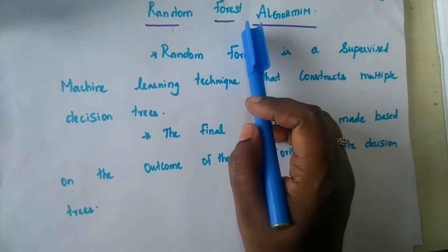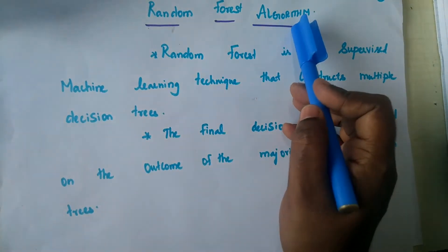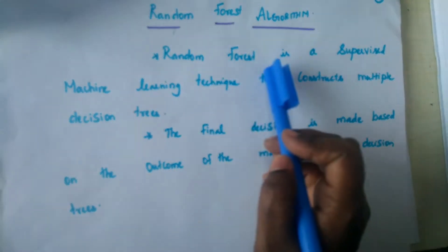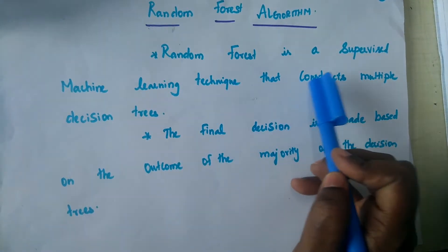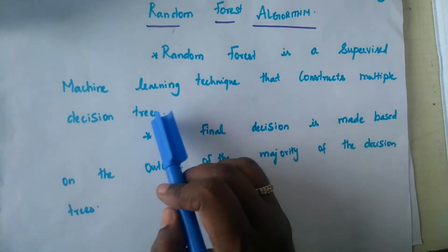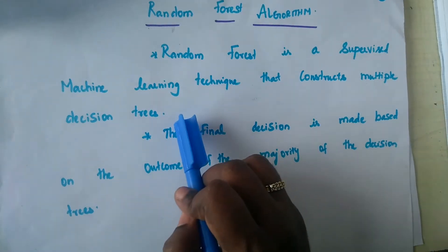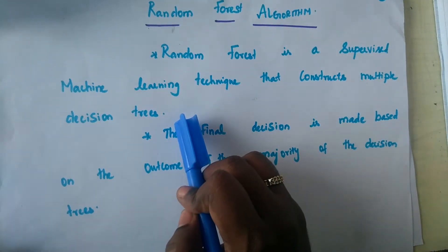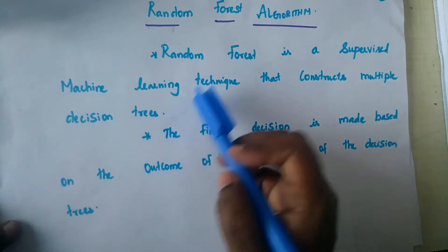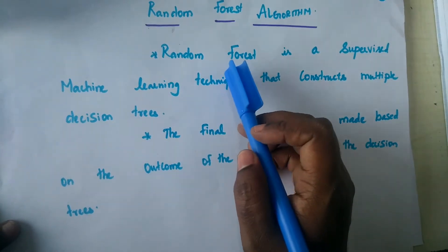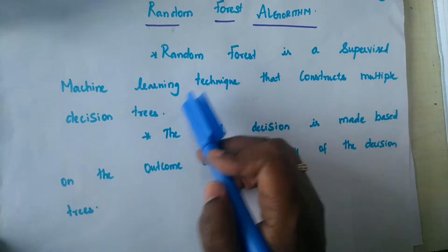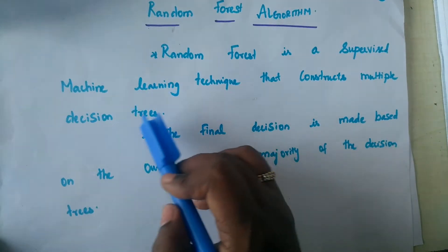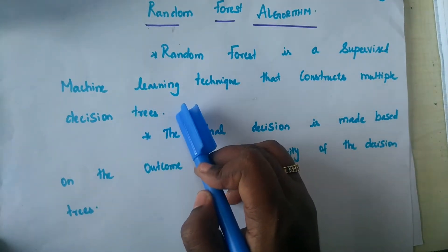Hello all, today we are going to see about the random forest algorithm. Random forest is a supervised machine learning technique that constructs multiple decision trees. To get a better understanding of random forest, it is advisable to first know about the decision tree algorithm or the CART model we saw earlier.